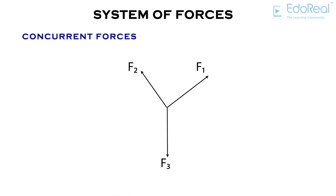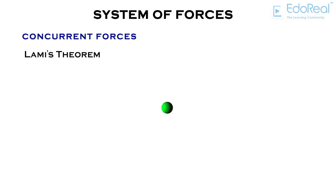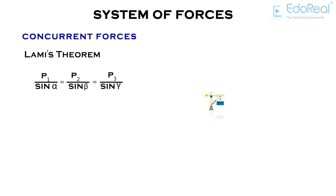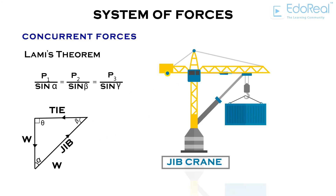When forces are coplanar and concurrent, to find out the forces or angle between the forces, we use Lamy's theorem. Lamy's theorem states that if three forces that are coplanar and concurrent act on a particle to keep it in equilibrium, then each force is proportional to the sine of the angle between the other two, and the constant of proportionality is the same. An example of this is the Jib Crane. From Lamy's theorem, we can write the corresponding equations.